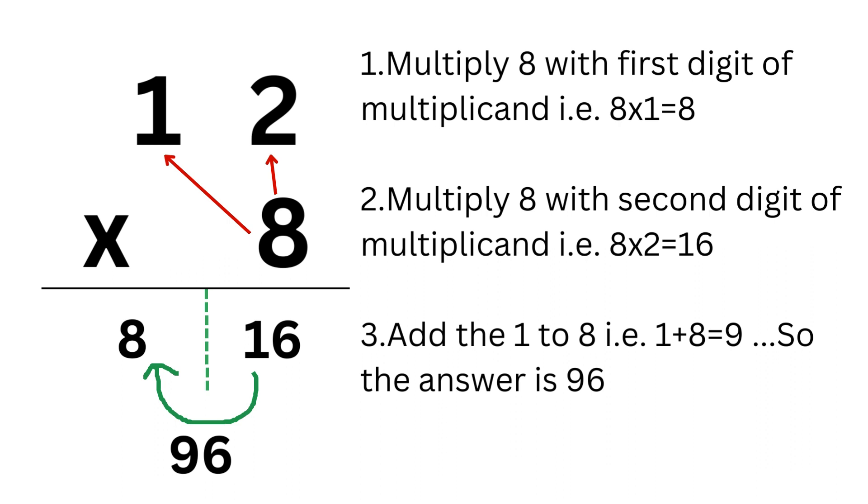Next, if you are having more than one digit in the second part of the answer, you have to add the rest of the digits except the one's place to the first part of the answer. For example, we are adding 1 to 8, which gives us the final answer as 96.